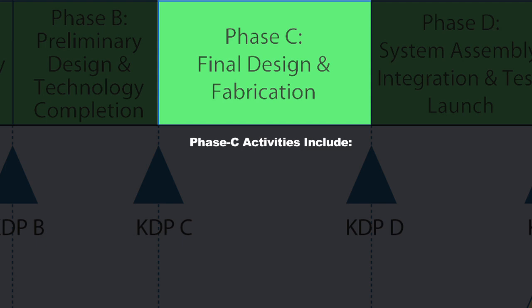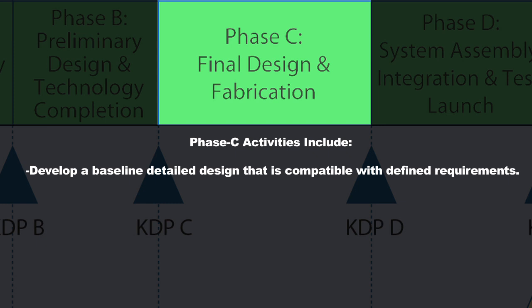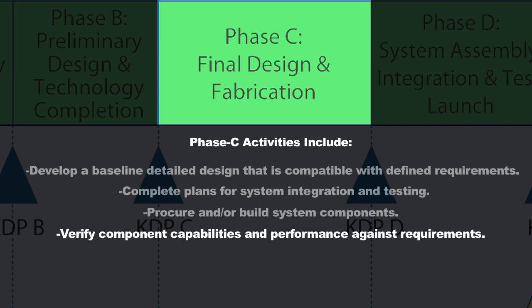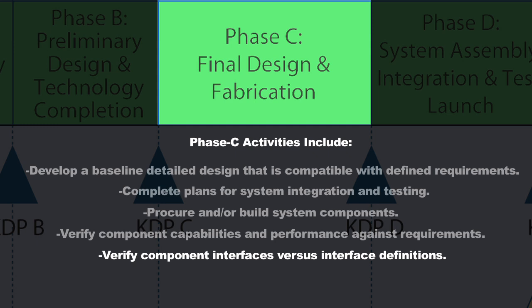Phase C activities include developing a baseline detailed design that's compatible with all requirements down to the lowest level defined in earlier periods. Completing plans for system integration and testing — this is where you'll actually put the system together and test it at a full system level — with all plans laid out in Phase C. Procuring or building all system components, verifying the capability and performance of each component against its requirements, and looking at component interfaces to make sure they're all clearly being met.